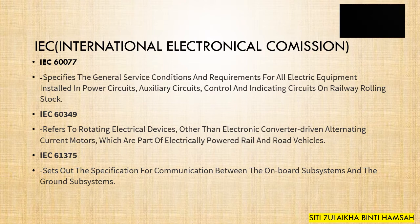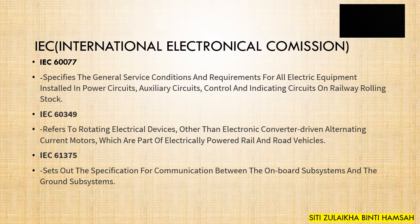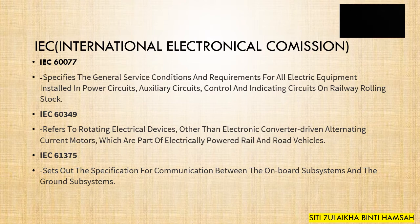IEC 60349, which covers electric traction, refers to rotating electric machines — including AC motors driven by power converters — which are part of electric power systems for rail and road vehicles. IEC 61375 covers electric railway equipment and sets out the specification for communication between on-board subsystems and ground subsystems. For the national standard, Malaysia has ACT 463, the Railways Act 1991, established to help grow the rail industry in line with fully developed countries.